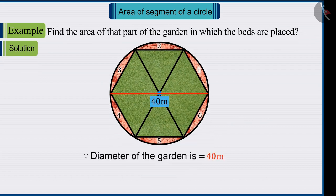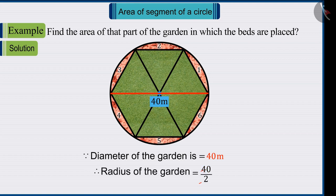Since it is given that the diameter of the garden is 40 meters, therefore the radius of the garden will be 20 meters.